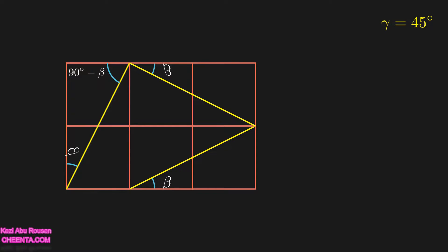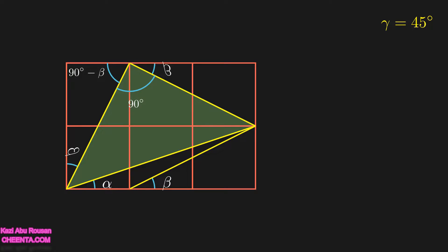Now, what about the angle in between 90-minus-beta and beta? The sum of those three angles must be 180 degrees, so the angle in between is 90 degrees. Now I will draw the line which creates the angle alpha. This creates a triangle with a 90-degree angle. Since I created this triangle by rotating one shape, two sides of this triangle are equal in length, so their opposing angles must be equal. Therefore each of those two angles has a value of 45 degrees.